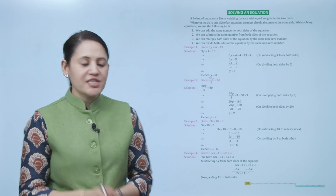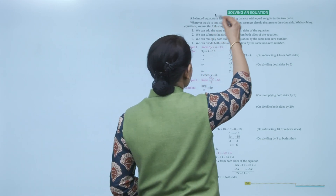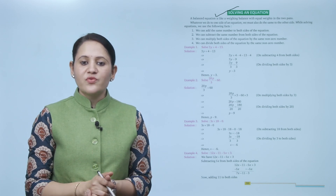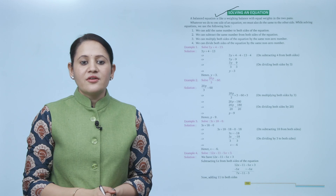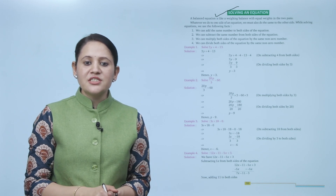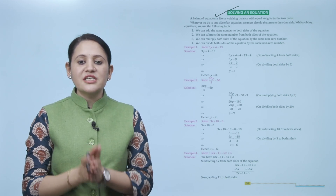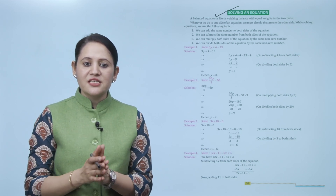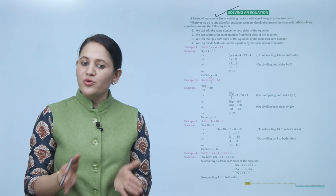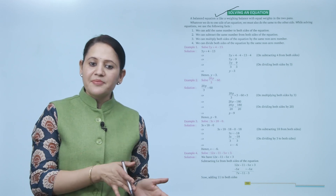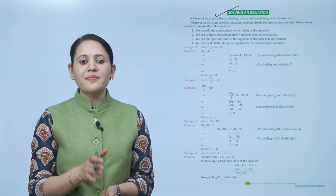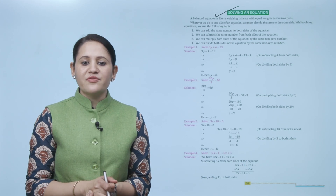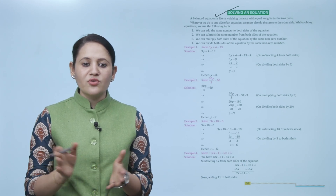Next is solving an equation. A balanced equation is like a weighing balance with equal weight on the two pans. Whatever we do to one side of an equation, we must also do the same to the other side. While solving an equation we use the following facts: we can add, subtract, multiply, or divide both sides of the equation by the same non-zero number.